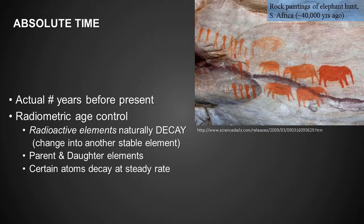Absolute time is a measure of the actual number of years before present. The absolute timescale is based upon the radioactive decay of radioactive elements. These radioactive isotopes naturally decay from one isotope into another. Elements are defined by the number of protons in their nucleus. Different isotopes are elements that have the same number of protons but a different number of neutrons. Radioactive isotopes decay from parent isotopes into daughter isotopes. Different kinds of isotopes decay at different rates, but each isotope of the same type has the same decay rate.